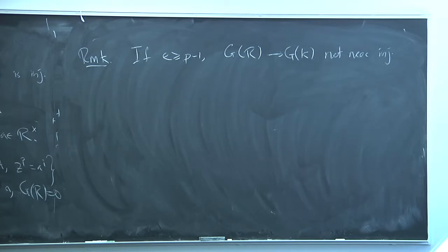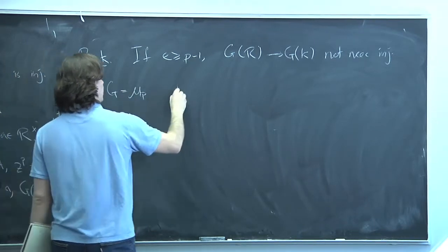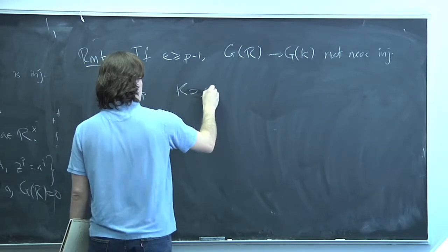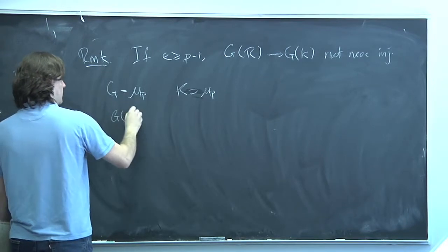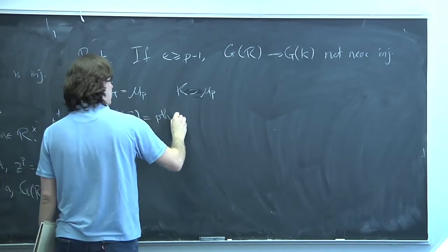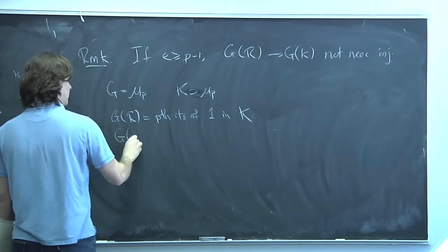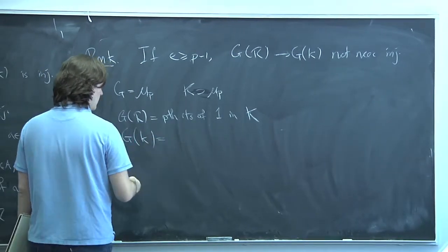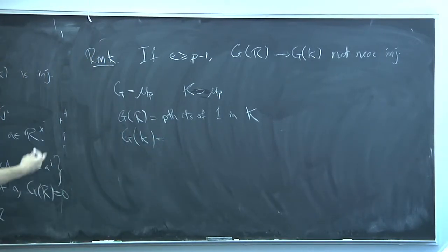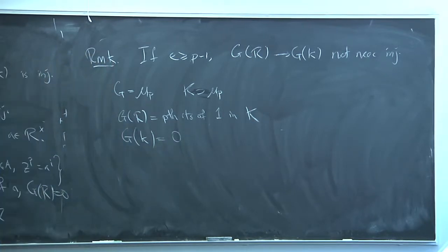This is basically the same as finding a counterexample for Raynaud's theorem, which we already talked about. If you take G = μ_p and K contains p-th roots of unity, then G(R) = {p-th roots of unity in K}, but G(k) has no p-th roots of unity — for example if K = Q_p(μ_p) whose residue field is a finite field with no p-th roots of unity. So that map is obviously not injective.